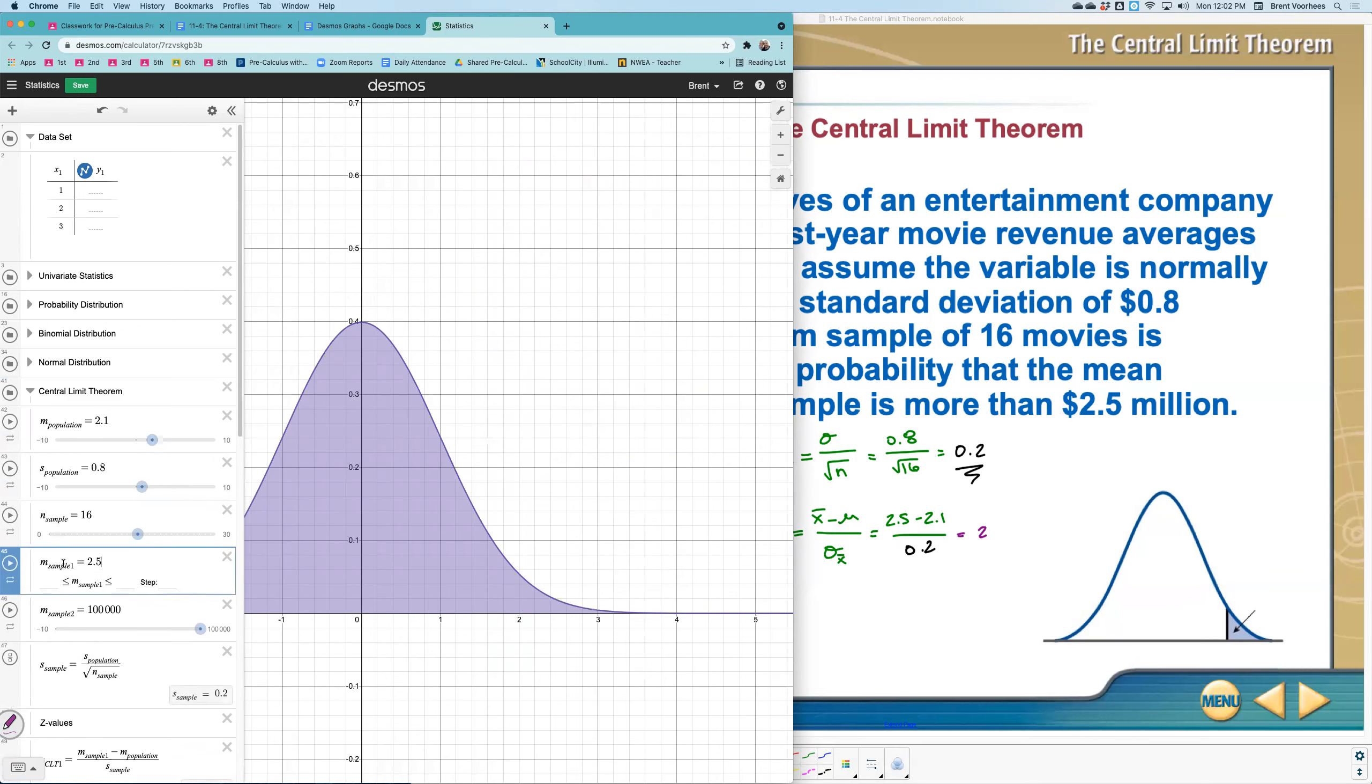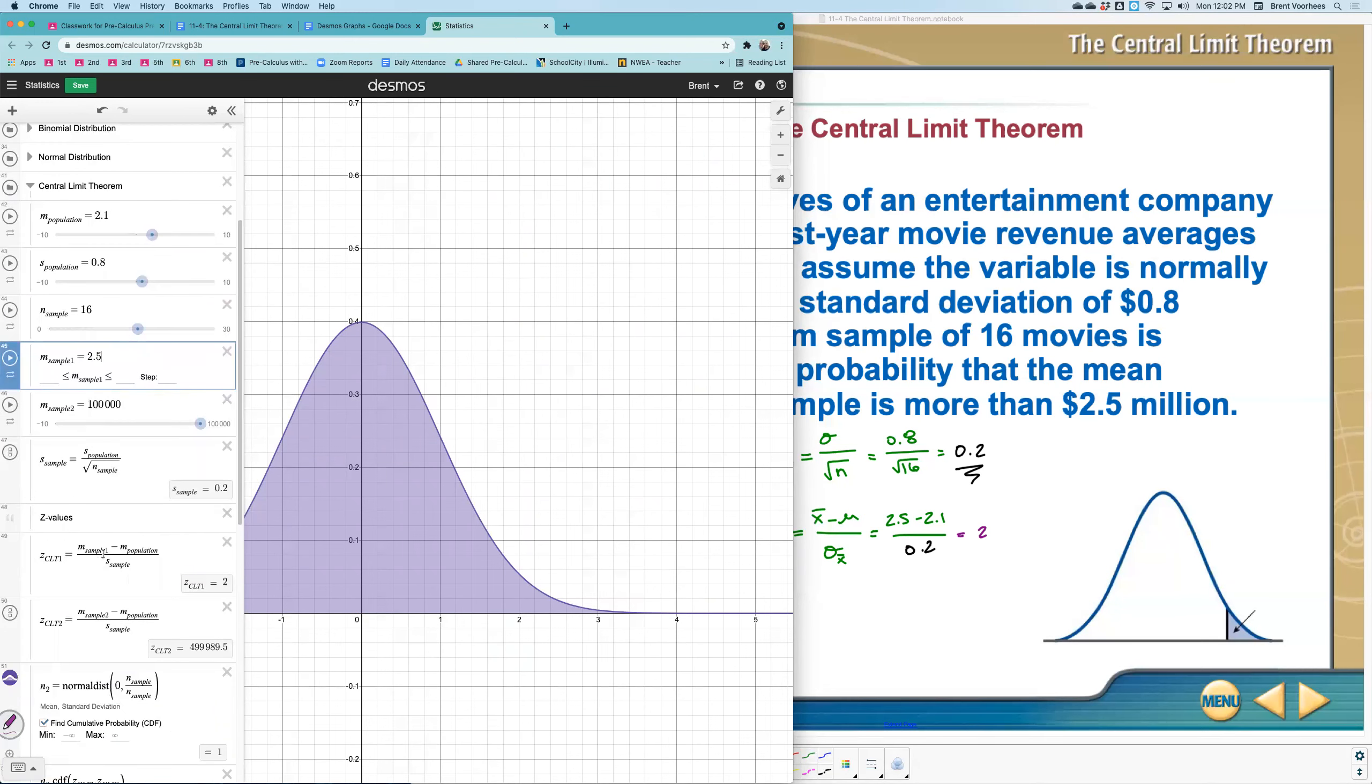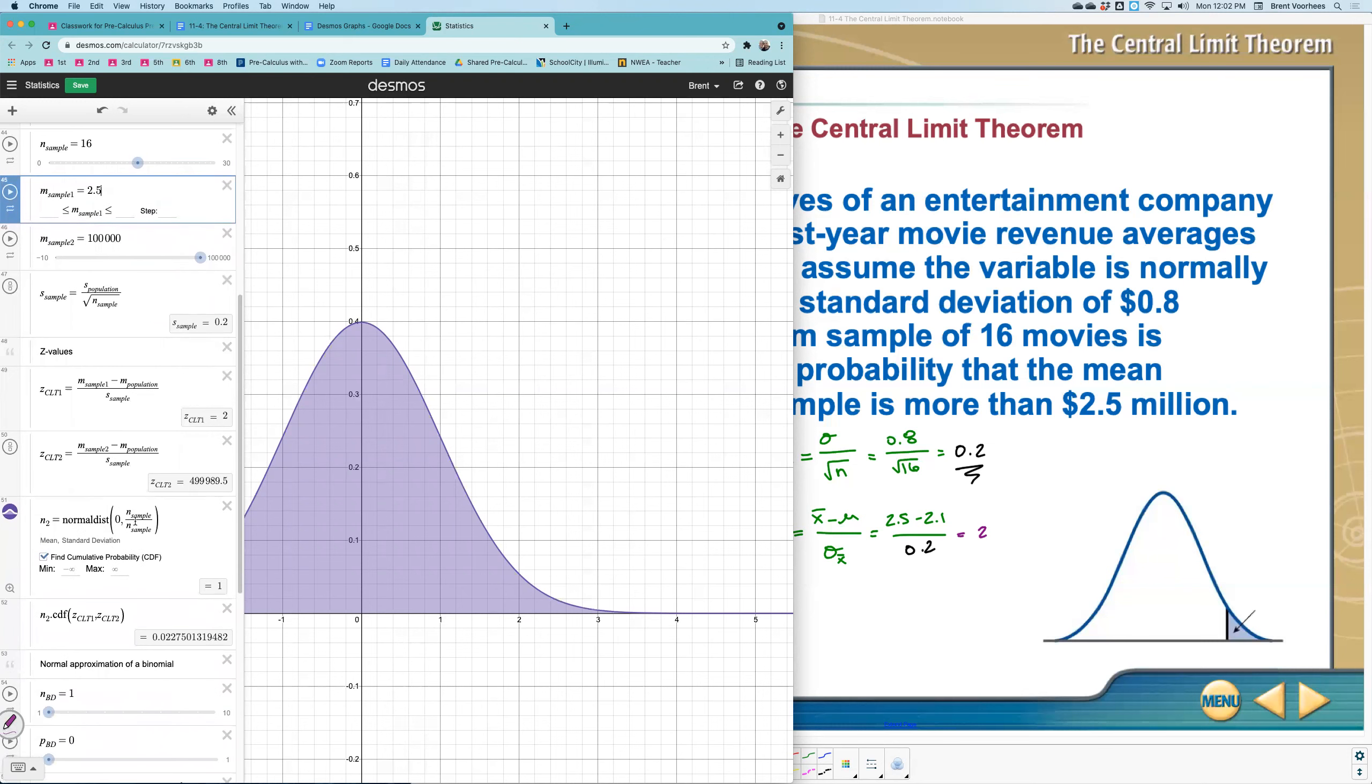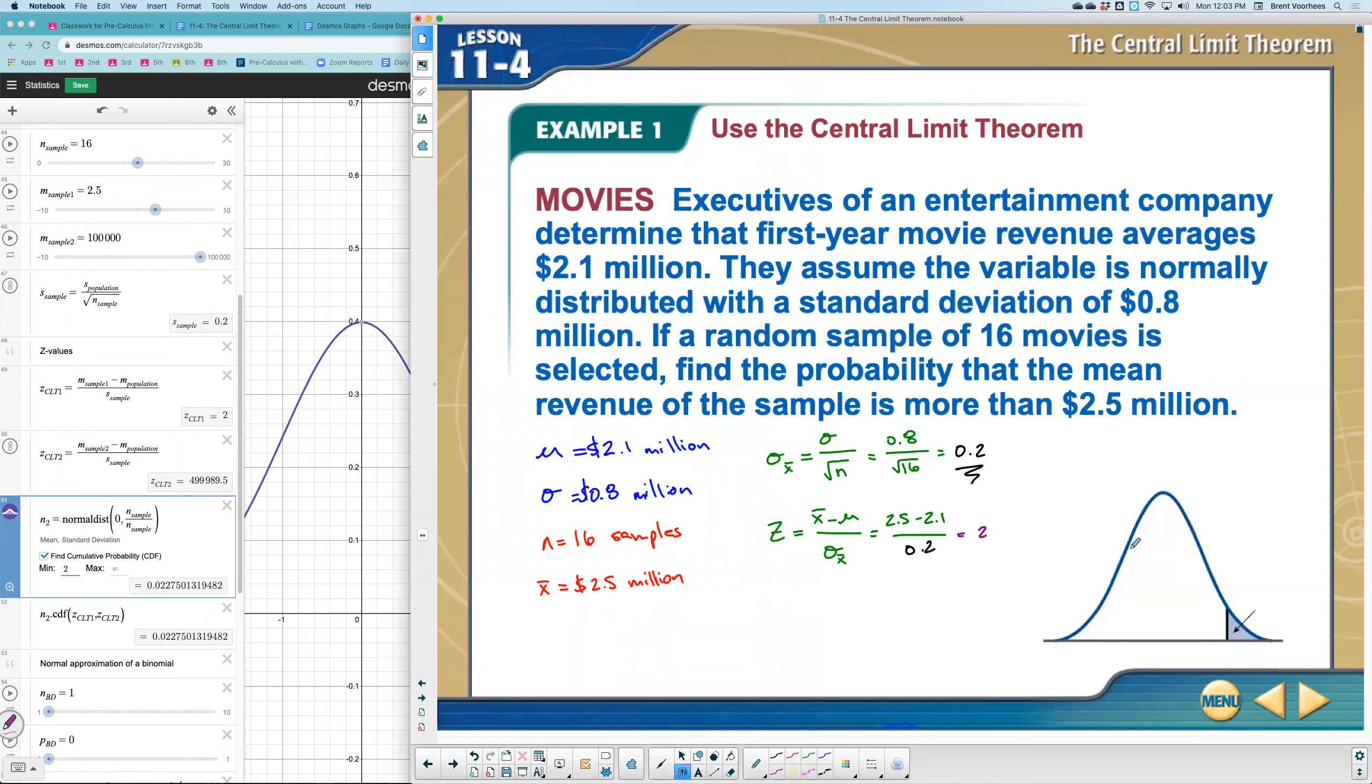I am going to now come over here, and this is the standard deviation of the sample, which is that 0.2, the same thing we got. The Z value is here, the first one for the central limit theorem. When I come down here, what we're going to use is the normal distribution. It's 0 comma 1, and we want to find what's the probability of it being greater than this line 2 here.